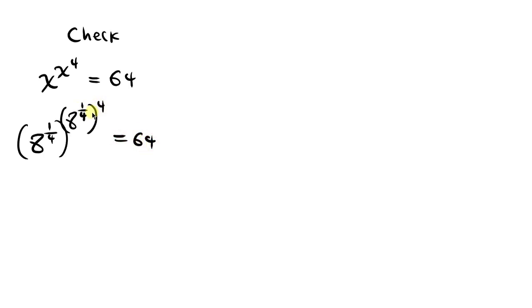Equal to 64. Since powers multiply, the power here can cancel off this power, leaving just 8. So we have 8 to the 1 over 4 raised to the 8 to be equal to 64.